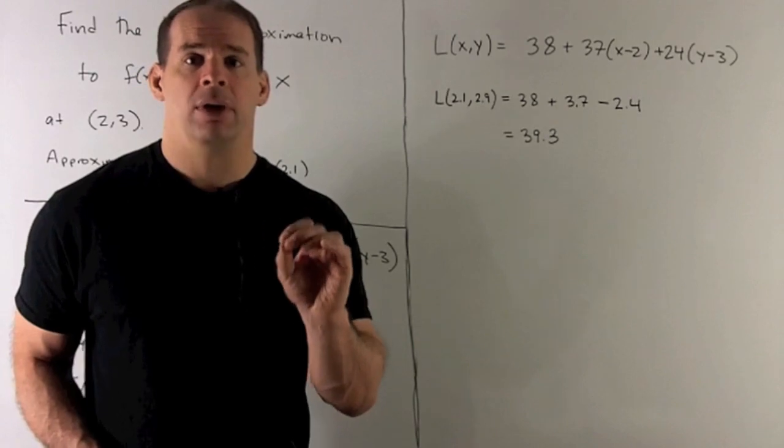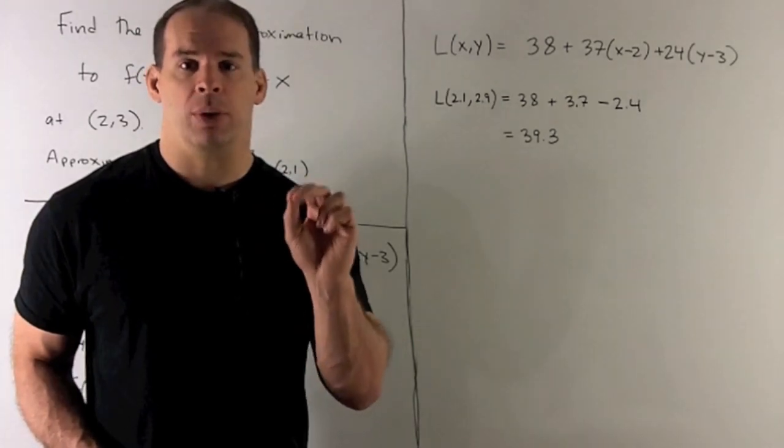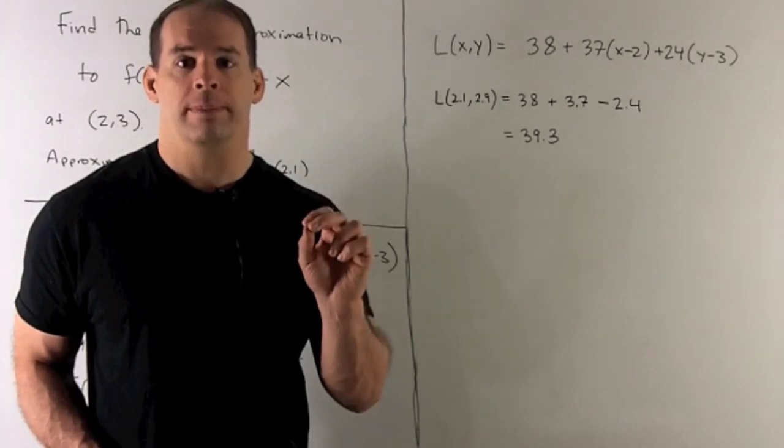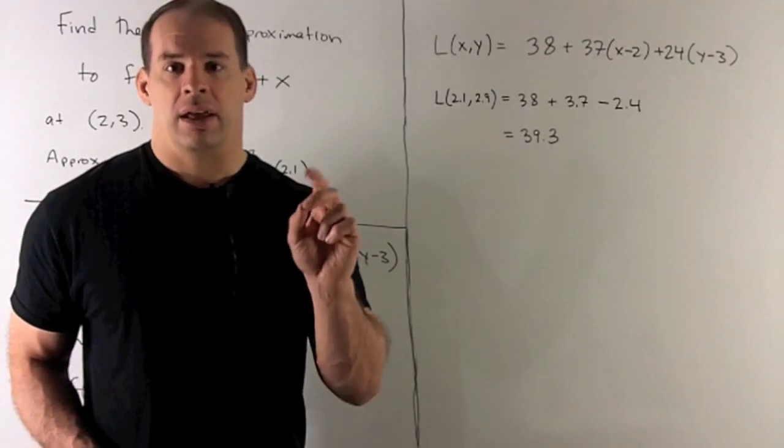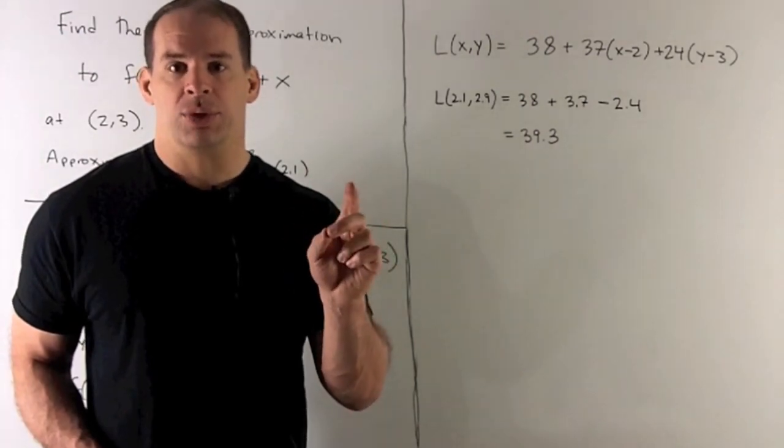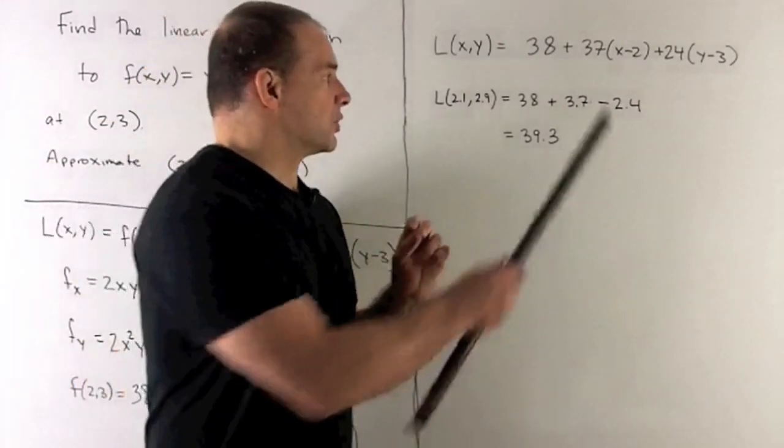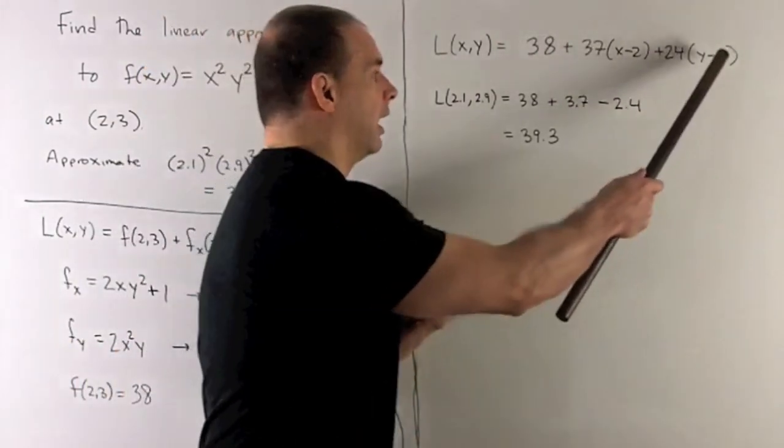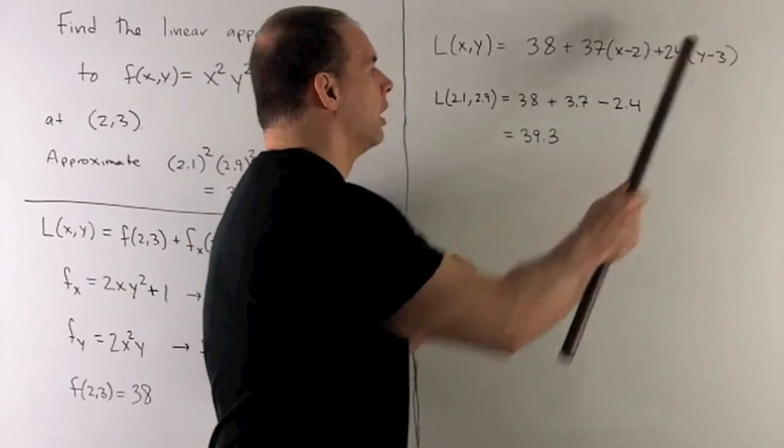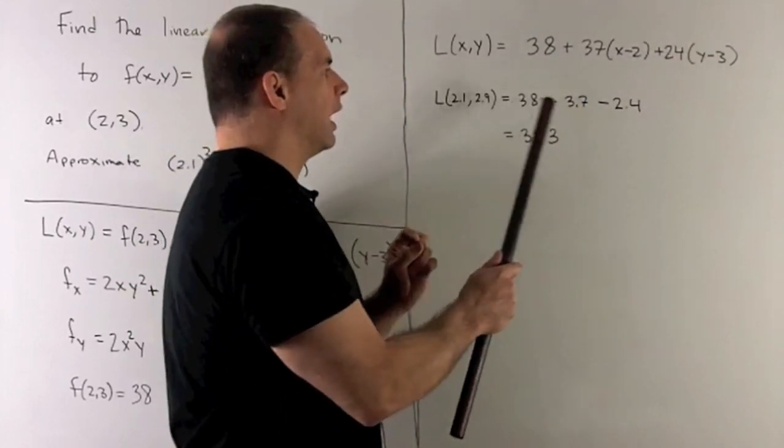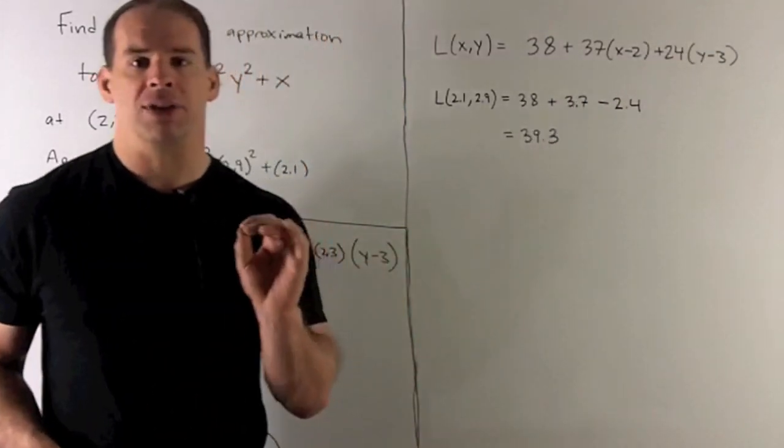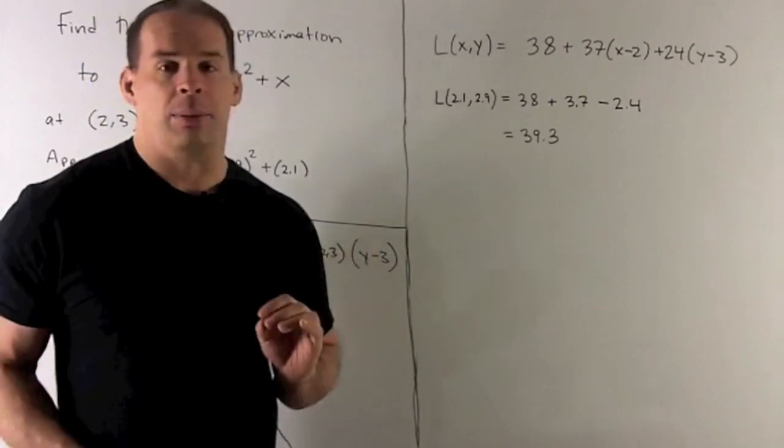To approximate our 2.1², 2.9² + 2.1, I just stick in x = 2.1, y = 2.9. So that's going to give me a 0.1 here and a -0.1 there. So our answer is going to be 38 + 3.7 - 2.4, which is 39.3.